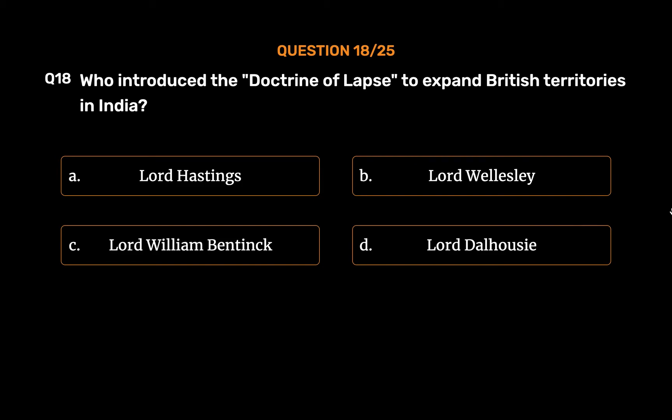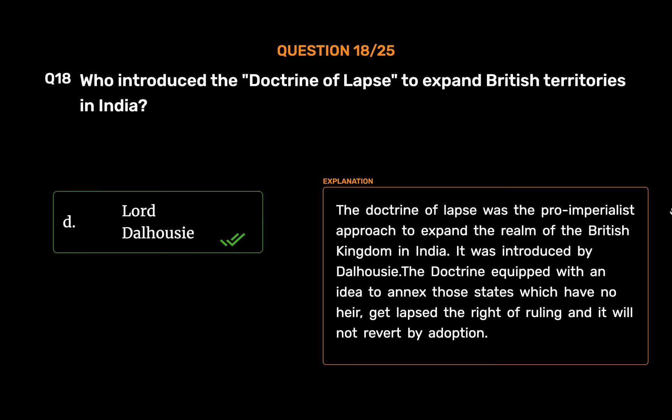The correct answer is Option D: Lord Dalhousie. The doctrine of lapse was the pro-imperialist approach to expand the realm of the British Kingdom in India. It was introduced by Dalhousie. The doctrine equipped with an idea to annex those states which have no heir, get lapsed the right of ruling and it will not revert by adoption.